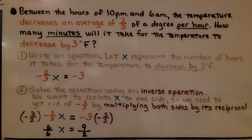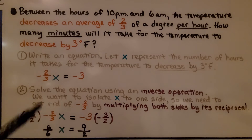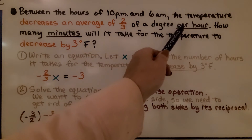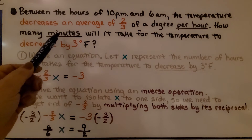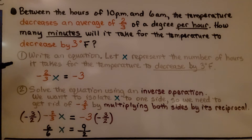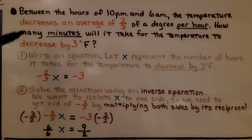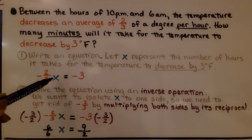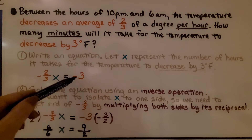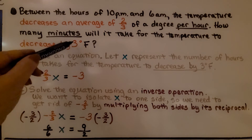Between the hours of 10 p.m. and 6 a.m., the temperature decreases an average of 2 thirds of a degree per hour. How many minutes will it take for the temperature to decrease by 3 degrees Fahrenheit? We let x represent the number of hours it takes. We write negative 2 thirds times x equals negative 3, because both the rate and the total change are decreases.